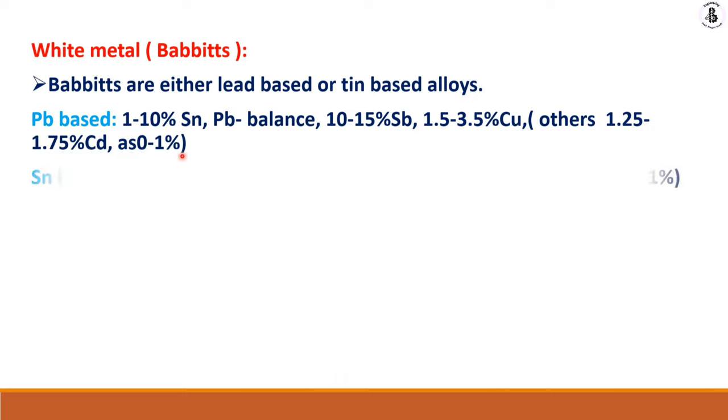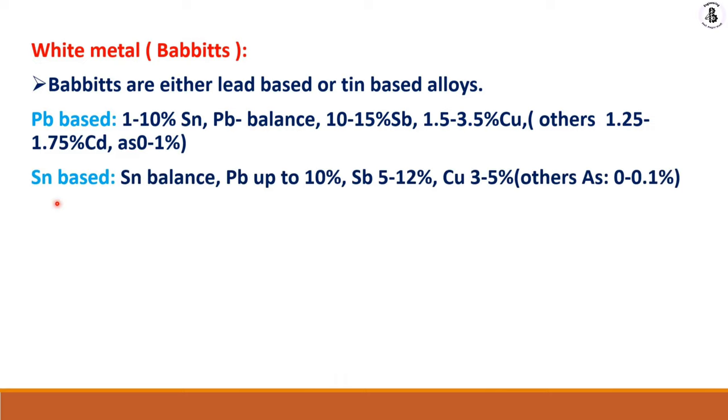For tin-based alloy white metal Babbitts, tin is in balance with lead up to 10%, 5 to 12% Sb, 3 to 5% copper, and the rest others.